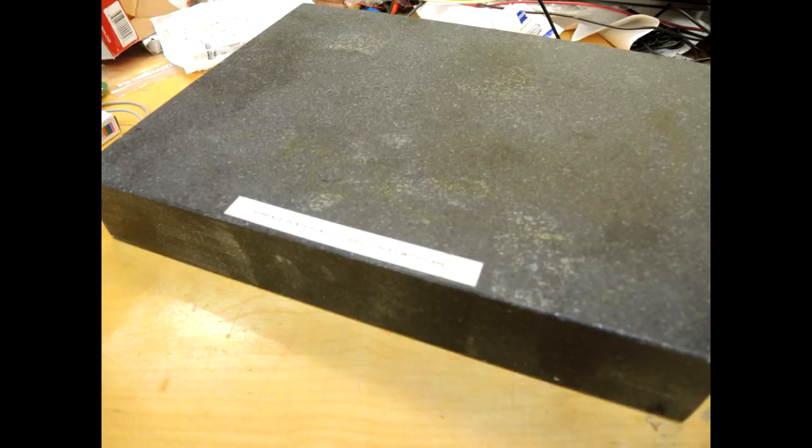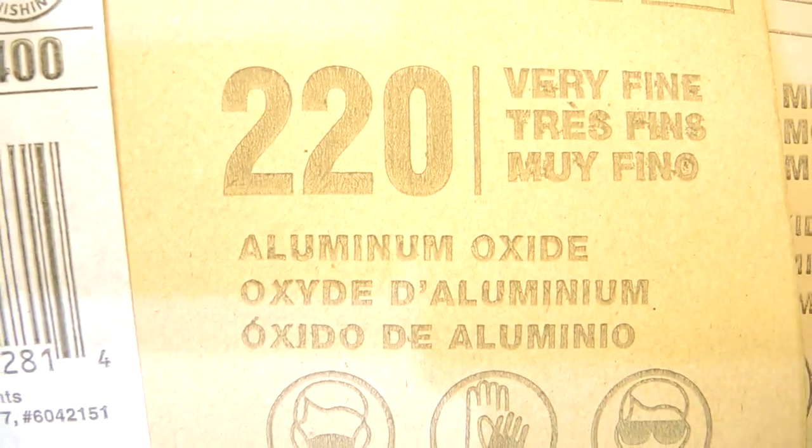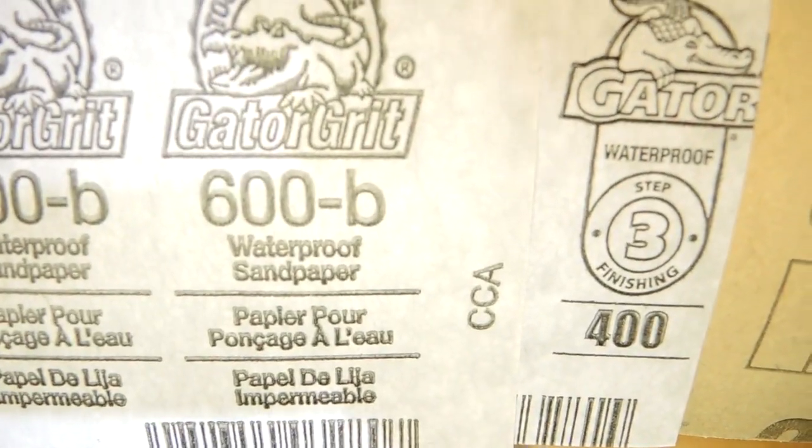That's just a chunk of granite that's been ground very flat and then I get a series of sandpaper. I start with 100 grit sandpaper, then 200, then 400, then 600 grit. Each grit as it goes higher becomes finer and finer.